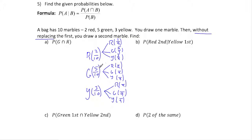That's the way it goes for the rest of these. If I pick green the first time — probability 5 out of 10 — the second time green is 4 out of 9, but red remains 2 out of 9 and yellow remains 3 out of 9. If I pick yellow the first time — probability 3 out of 10 — the second time yellow is 2 out of 9, green is 5 out of 9, and red is 2 out of 9.